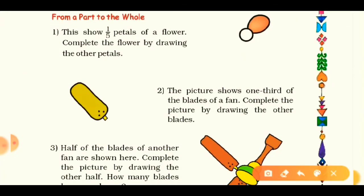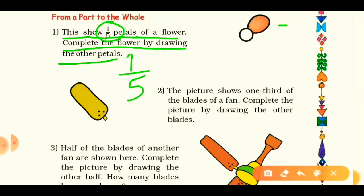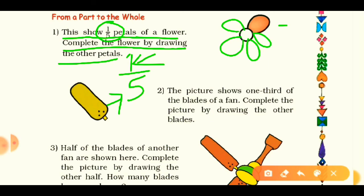Our last topic is from a part to the whole. The picture shows one-fifth of a petal of a flower — complete the flower by drawing the other petals. One-fifth means the numerator is one and the denominator is five, so total parts are five and one is already drawn. We need to draw four more petals: two, three, four, and five. Always remember one upon five means five is the total number of parts.